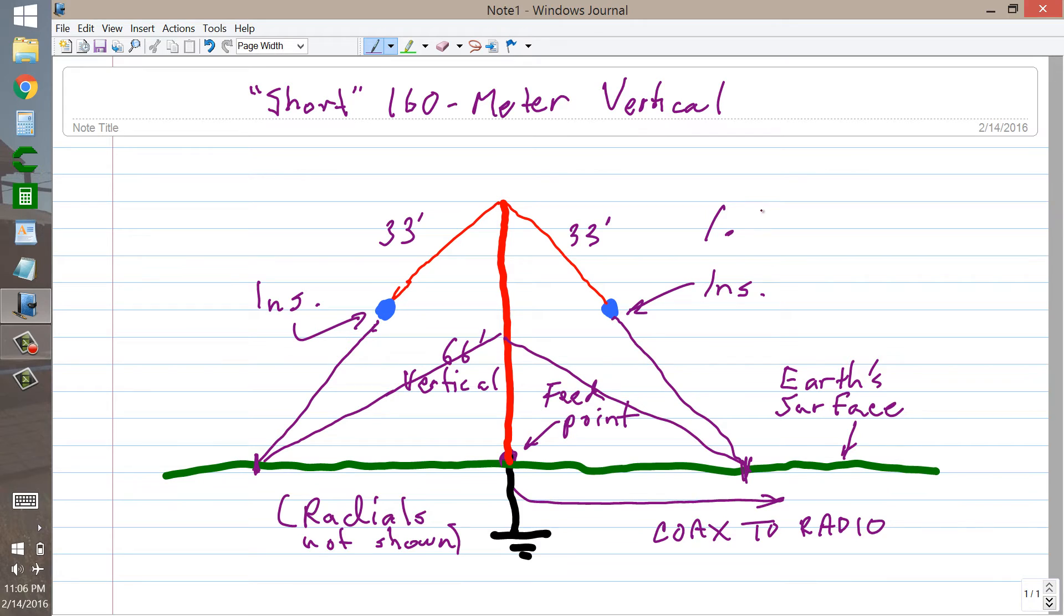Say, 1.810 MHz. An additional advantage of having a capacitively loaded antenna like this is that it has a broader bandwidth than it would if, for example, you used a loading coil at the feed point to shorten the antenna.